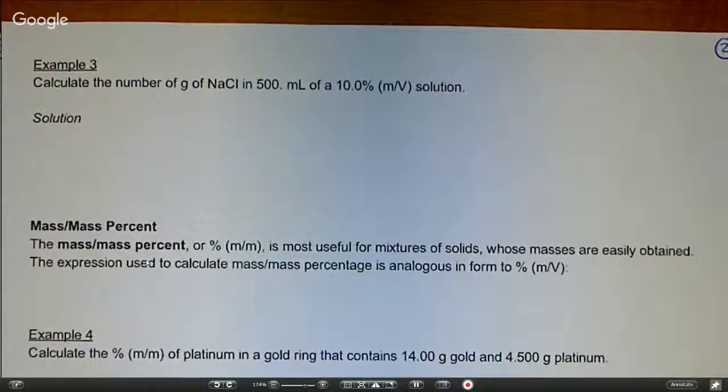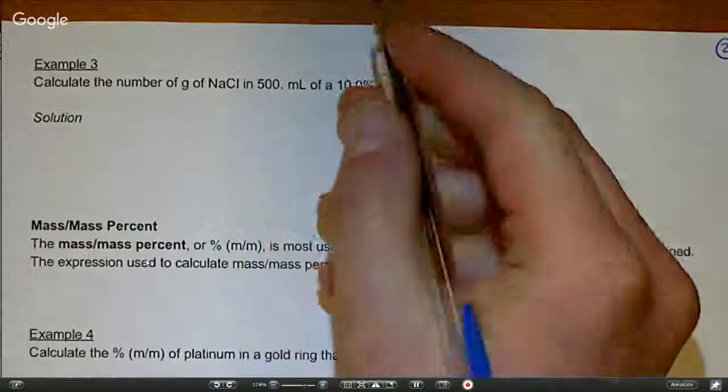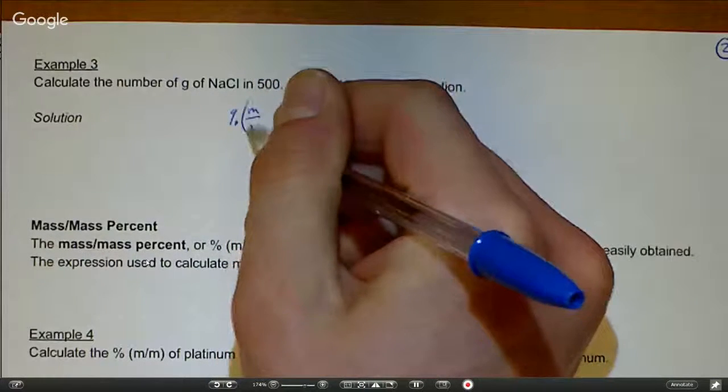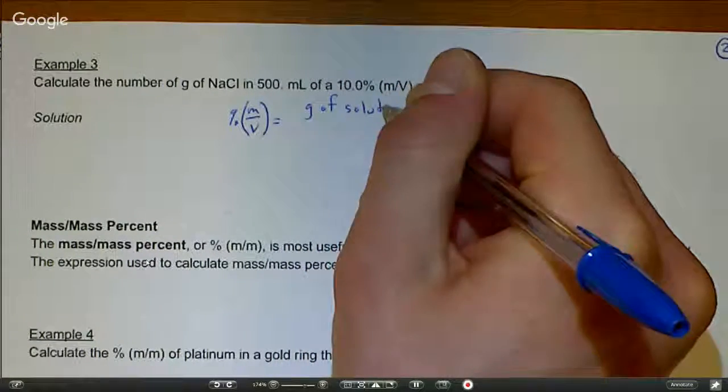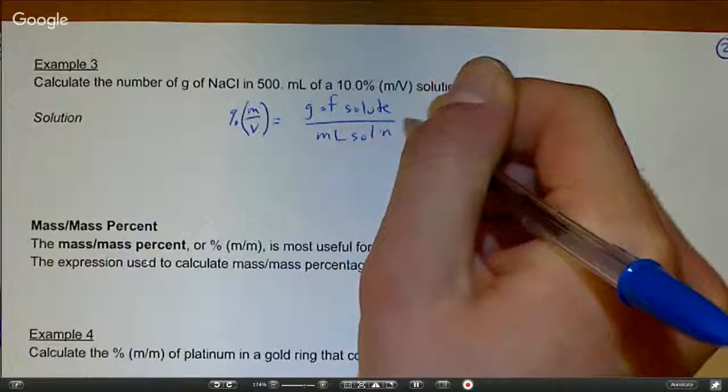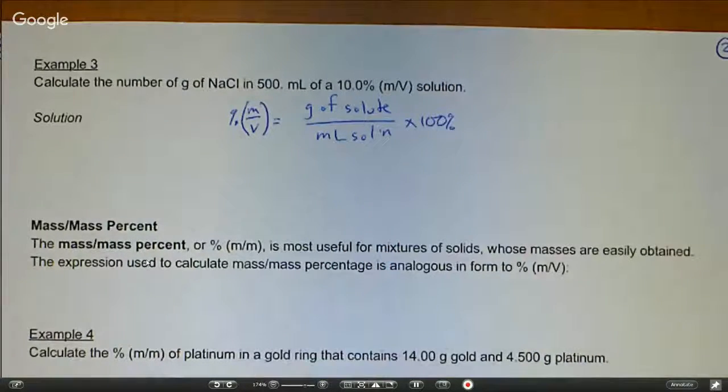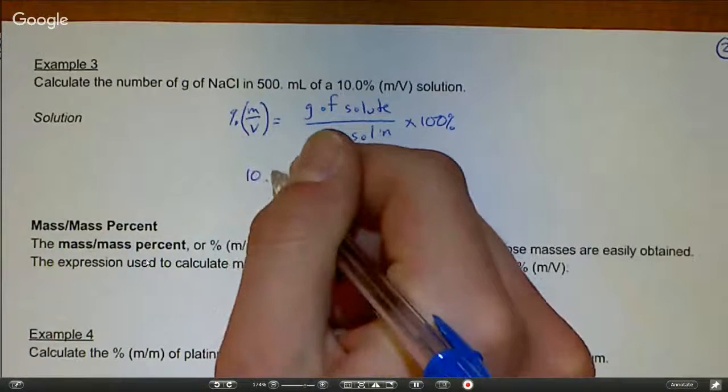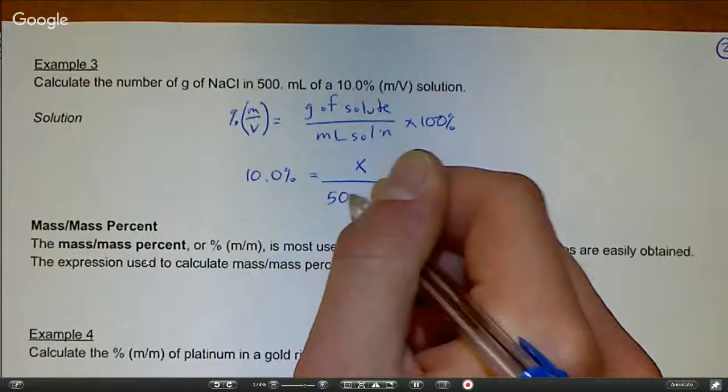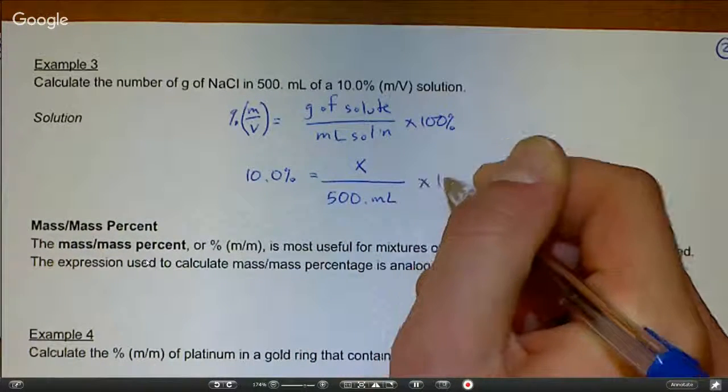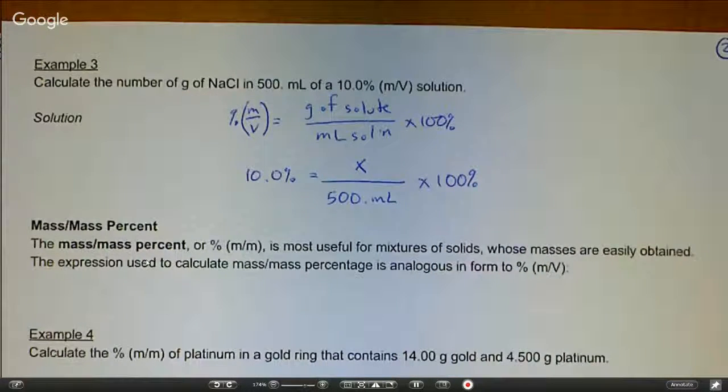Example three says to calculate the number of grams of sodium chloride in 500 milliliters of a 10 percent mass volume solution. In this case, instead of finding the percent, we're working a different way to find the number of grams. We know our percent mass volume is grams of solute over milliliters of solution times 100 percent. We know our percent is 10, we don't know the number of grams, and our volume is 500 milliliters. We've got that times 100 percent over here.